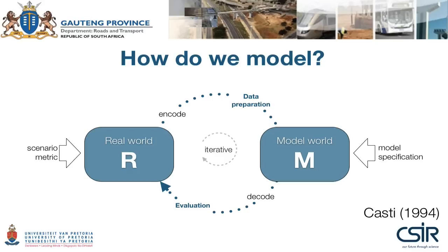Once we've run and solved the model, it just provides us with a solution. We then need to decode that solution back into human-understandable terms and evaluate it until we can formulate a decision. This is, for me, a major — and perhaps philosophical — issue: we never solve the real world problems. We only solve the model. It is the decision based on the model that gets implemented in the real world, and hopefully that decision is a good one and actually changes the real world's problem for the better. But we solve mere models, not reality.